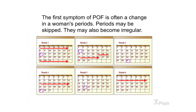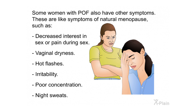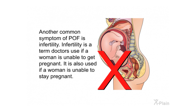The first symptom of POF is often a change in a woman's periods — periods may be skipped or become irregular. Some women with POF also experience symptoms similar to natural menopause, such as decreased interest in sex or pain during sex, vaginal dryness, hot flashes, irritability, poor concentration, and night sweats. Another common symptom is infertility, meaning a woman is unable to get pregnant or stay pregnant.